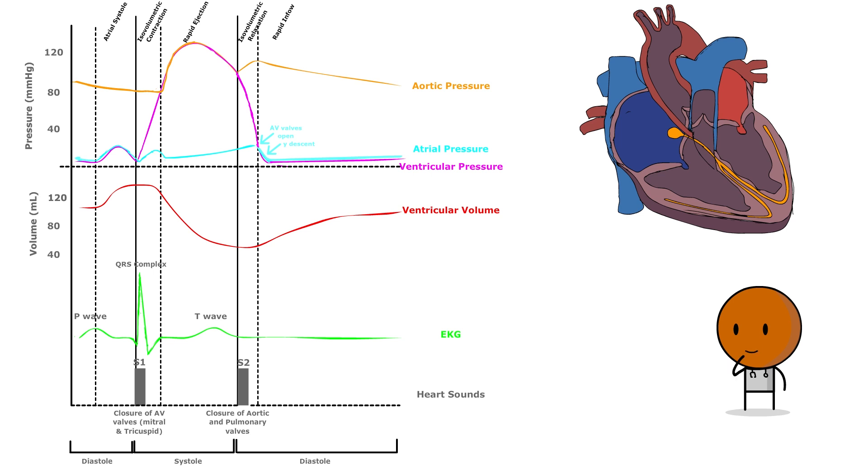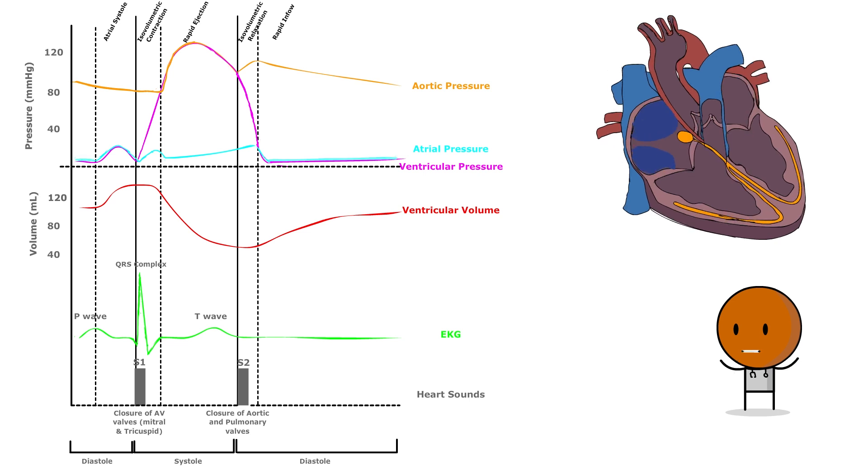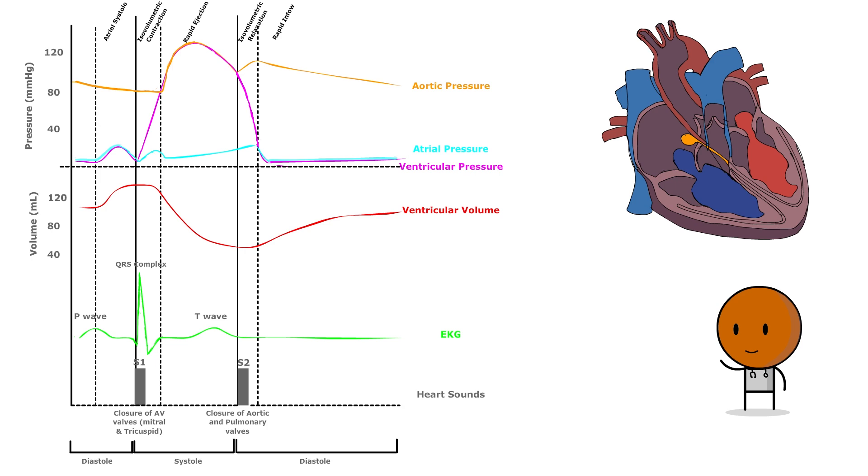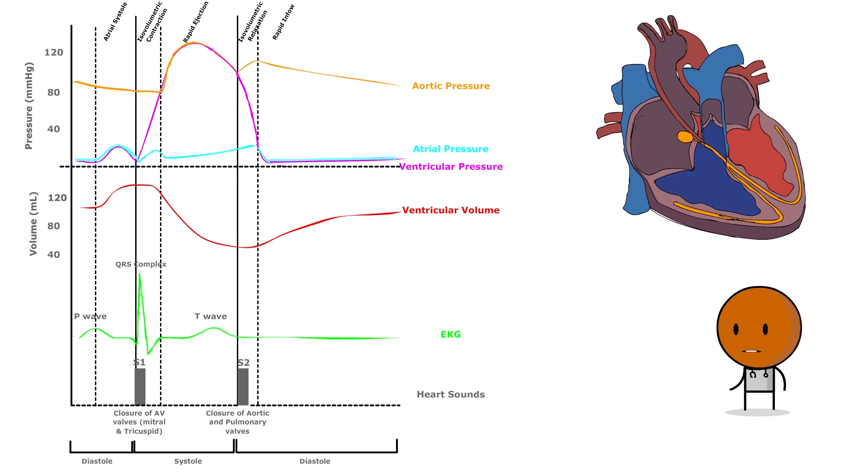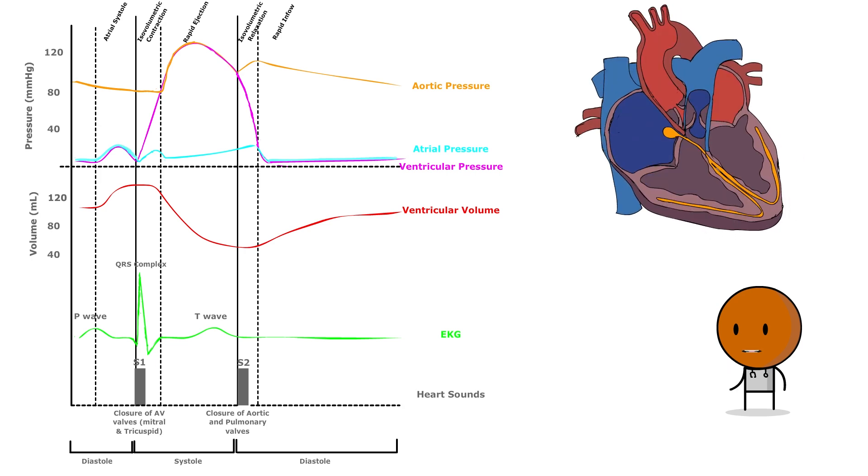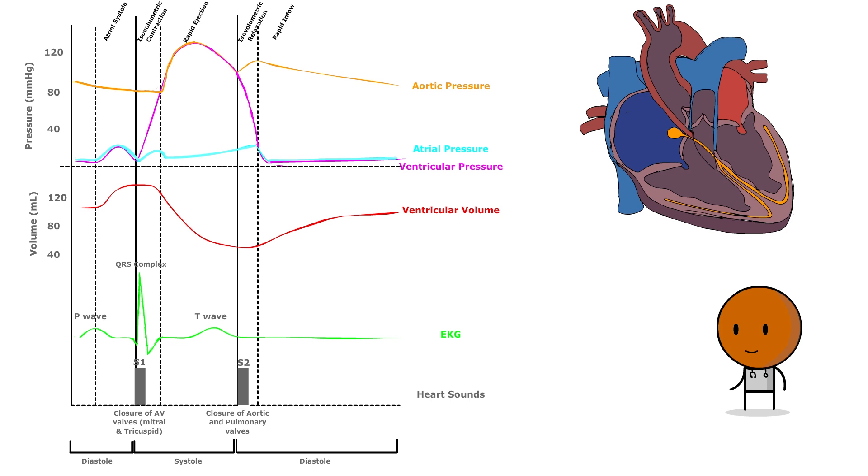So, in summary, atrial pressure increases as the atria fill with blood and peaks with contraction. It then falls as blood is transferred to the ventricles and the cycle repeats. Whew! That was a lot. But, if we break it down in little pieces, it does make sense.